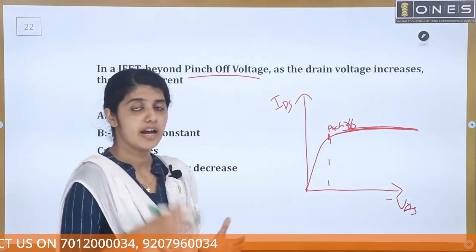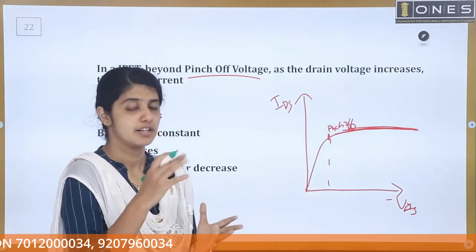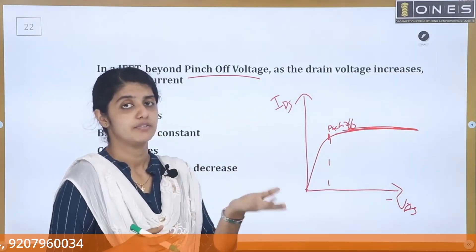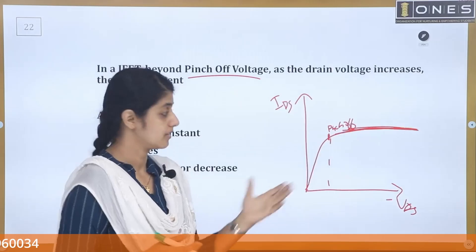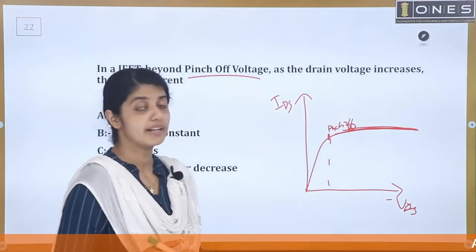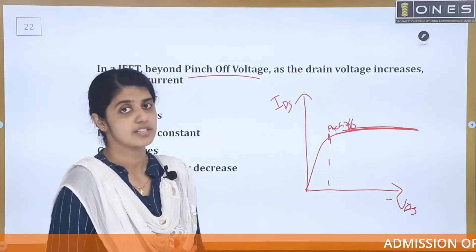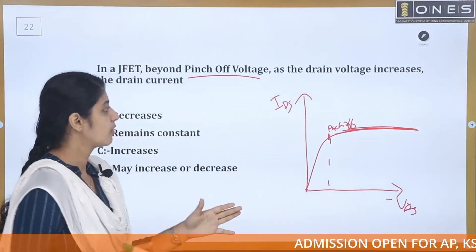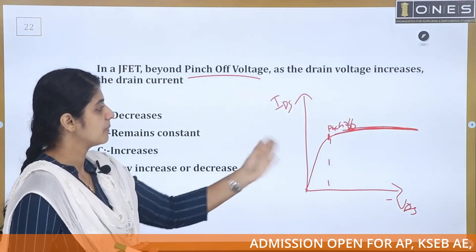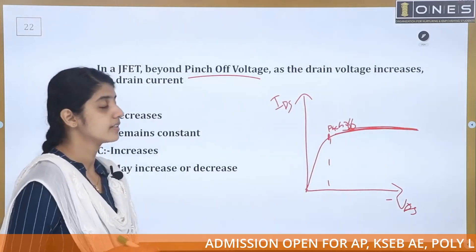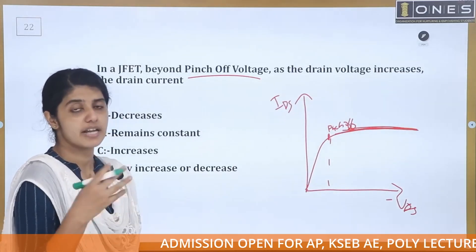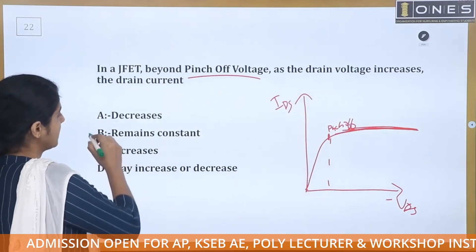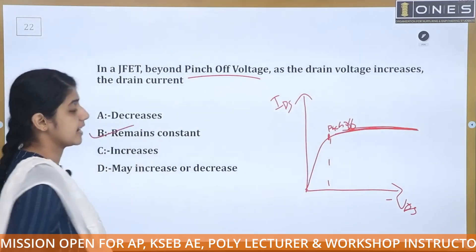IDS is equal to IDSS into (1 minus Vgs by Vp) squared — this is Shockley's equation. The pinch-off voltage defines the saturation region, where the current remains constant beyond that point.